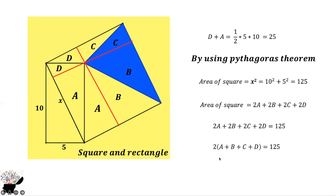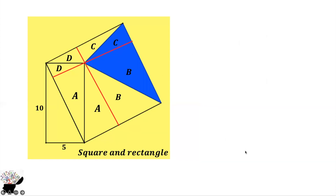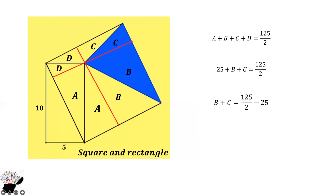We know that D + A = 25, and we are looking for B + C, which is the area of the blue triangle. From A + B + C + D = 125/2, we substitute: 25 + B + C = 125/2. Subtracting 25 from both sides gives B + C = 125/2 − 25 = 75/2.